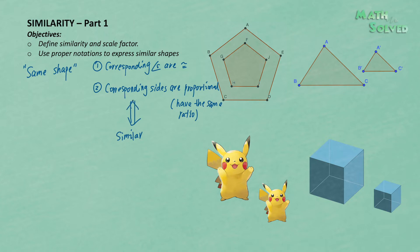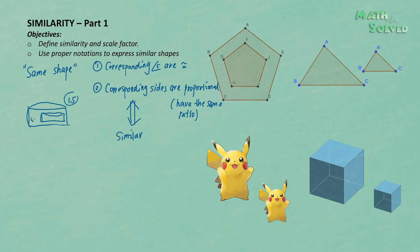Now let's think of a question: are any two rectangles similar? The answer is no. For two rectangles, the corresponding angles must be congruent — all four angles are 90 degrees — but the corresponding sides are not necessarily proportional. For example, this side over this side might give a ratio of 1.5, while this side over this side may be 1.1, so the corresponding sides may not be proportional.